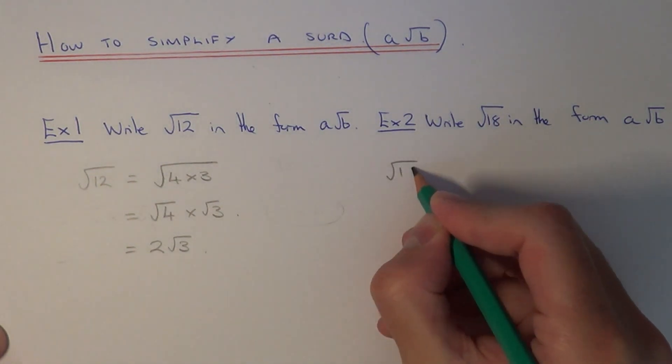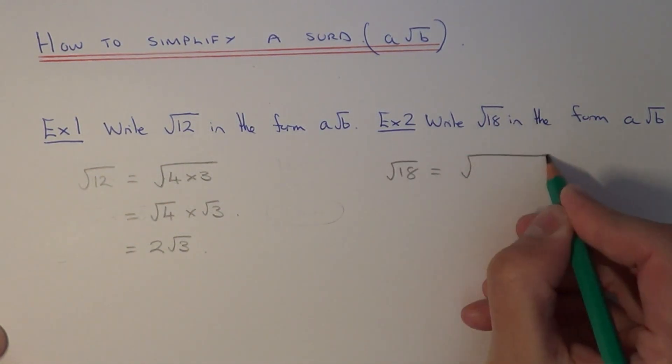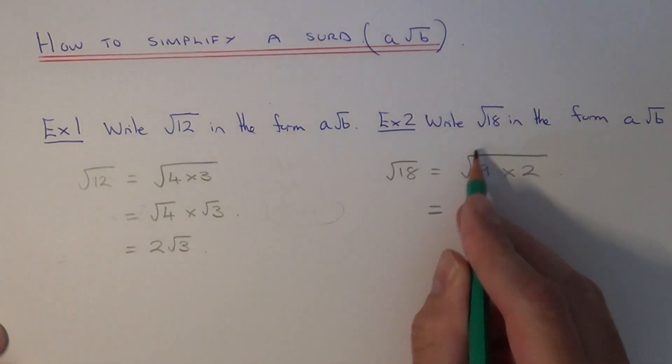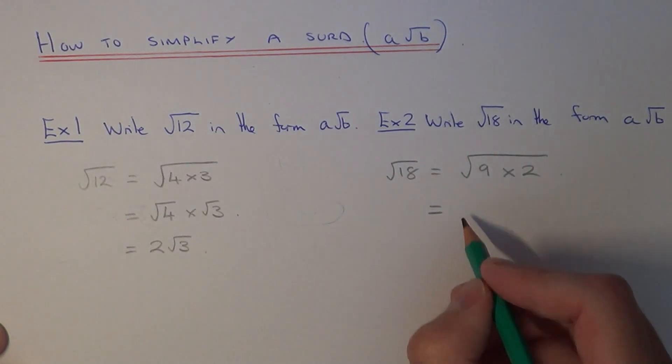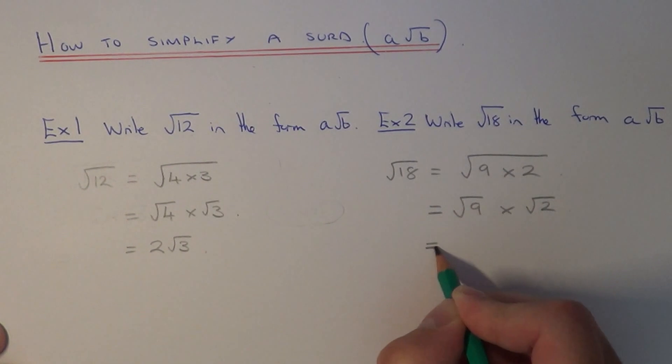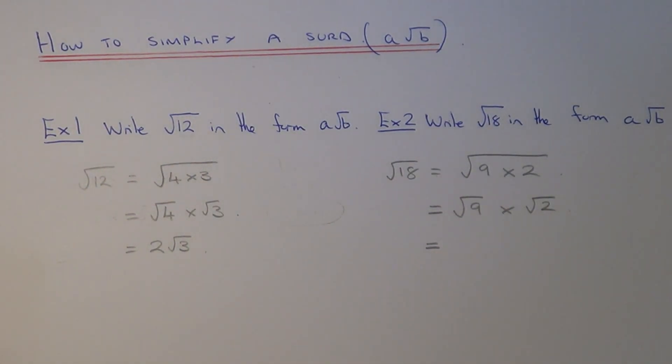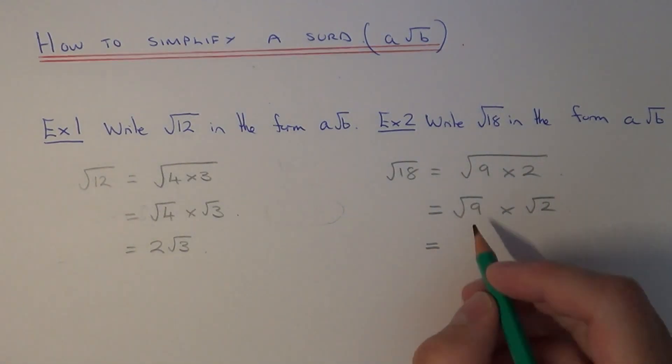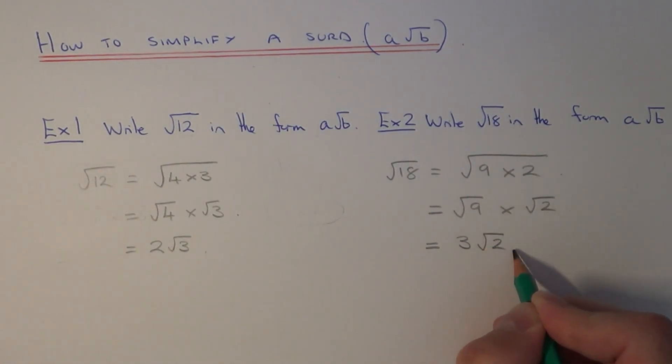So we can write root eighteen as the square root of nine times two. We just need to break this up now into two separate surds. So we can write this as root nine times root two. Again, the reason we're looking for a square number is because we can square root nine, so the square root of nine is three, and we just put the root two on at the end.